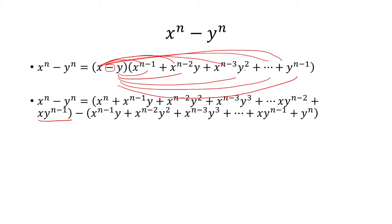All the way down to the last one, which is y times y to the n minus 1, which is y to the n. And notice, a lot of these terms will cancel.